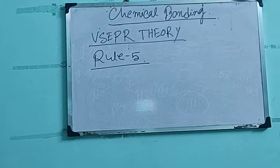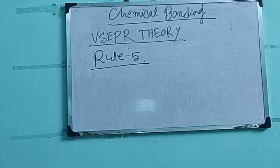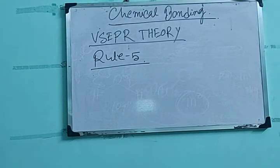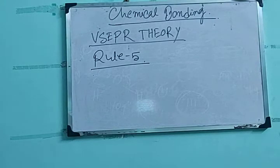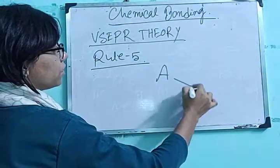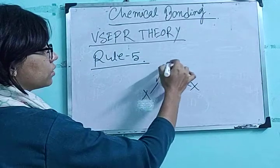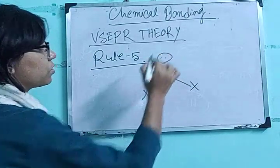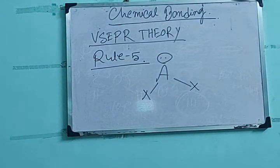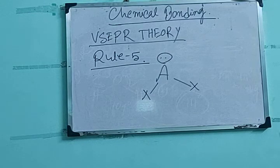Rule number 5 is saying about the lone electron pair on the central atom having an incomplete valence shell causes greater repulsion, which results in significant contraction in bond angle. So it is saying that if we consider AX and there exists a lone pair of electrons, the lone electron pair on the central atom having incomplete valence shell causes greater repulsion.